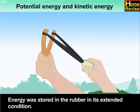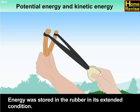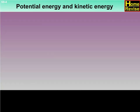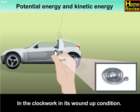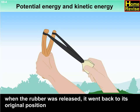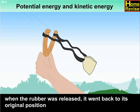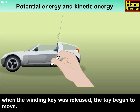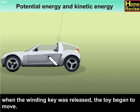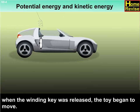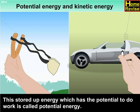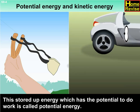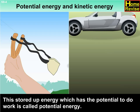Energy was stored in the rubber in its extended condition and in the clockwork in its wound-up condition. That is why when the rubber was released, it went back to its original position, and when the winding key was released, the toy began to move. This stored-up energy, which has the potential to do work, is called potential energy.